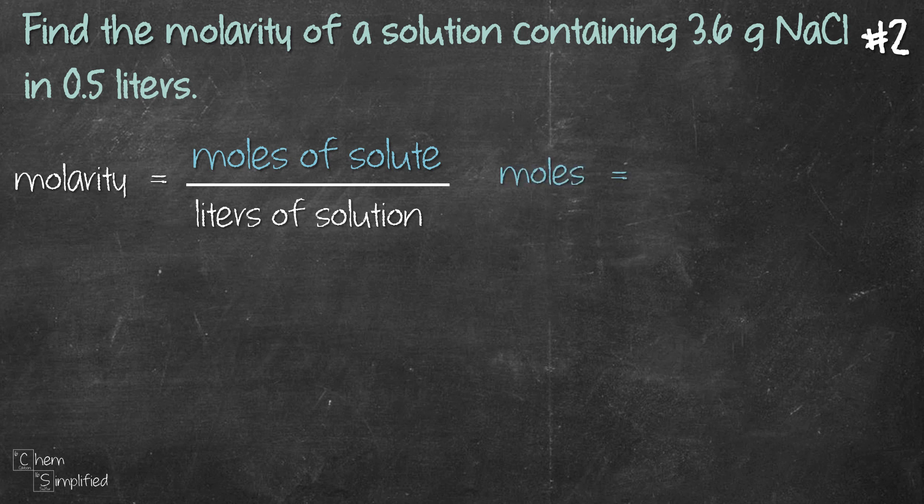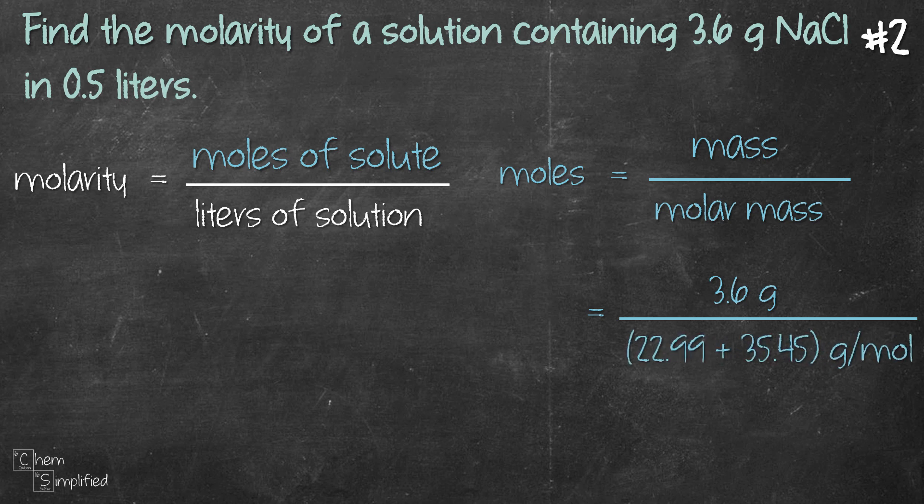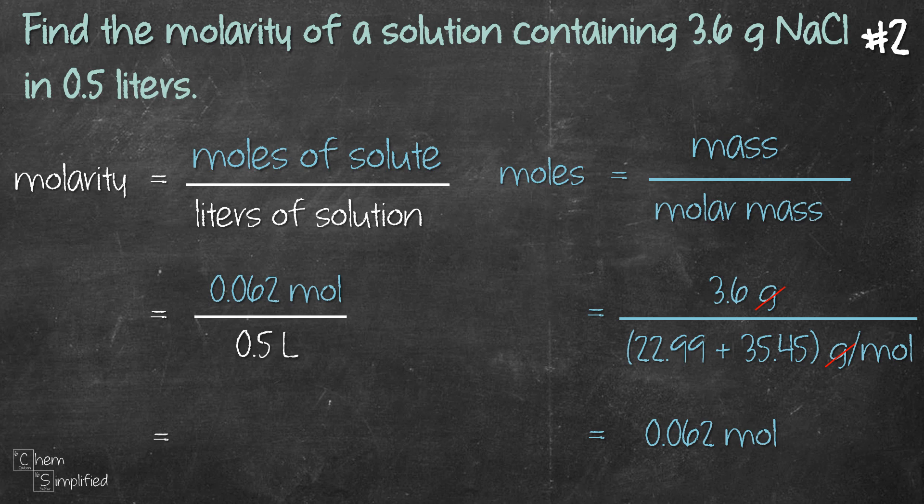Starting with 3.6 grams, we take the mass, divide by the molar mass of NaCl, and we get the grams cancelled off, and we get 0.062 moles. Now, with that 0.062 moles, we plug it back into the molarity formula, and that gives us 0.12 molar.